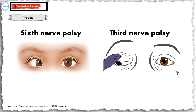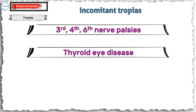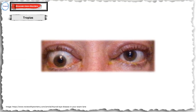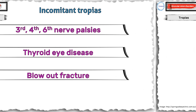In extraocular muscle palsies, the prisms are usually placed in front of the affected eye; however, some people place them in front of the normal eye to prevent secondary contracture of the ipsilateral antagonist. Other uses include thyroid eye disease and blowout fracture.